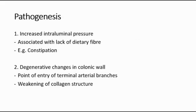Pathogenesis of diverticular disease involves two main factors. First is due to increased intraluminal pressure, and second is due to degenerative changes in the colonic wall — especially at the point of entry of the terminal arterial branches of the colon, where the serosa is the weakest, making it easier for the mucosa to herniate, causing diverticulum. Also, weakening of the collagen structure in the colonic wall due to aging is a risk factor. So when there is degeneration in the colonic wall plus increased intraluminal pressure, a diverticulum will be formed.